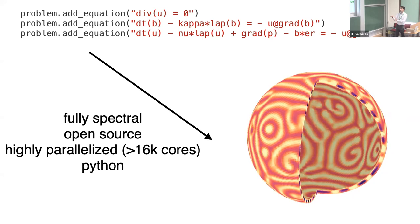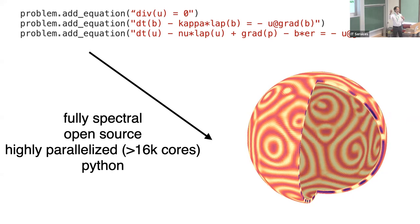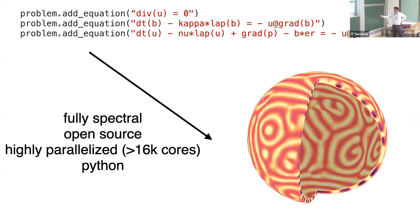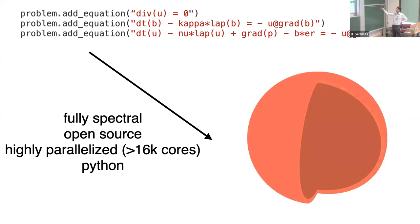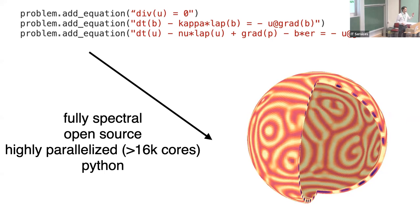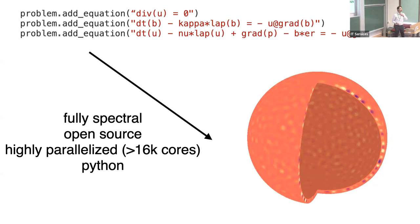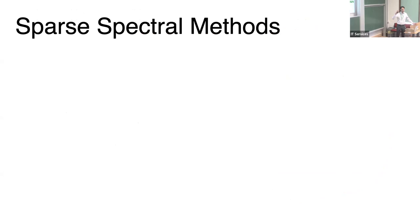The code is open source and highly parallelized — we've run on at least 16,000 cores and have good evidence it could run on even larger computers. The reason we have great flexibility is that the code is written in Python, though the Python part isn't the most computationally efficient, so all the real work is done by compiled libraries.